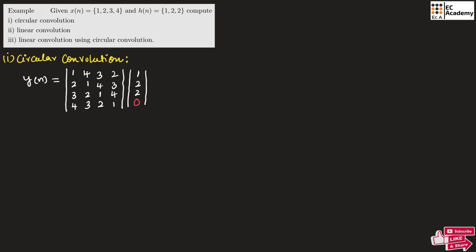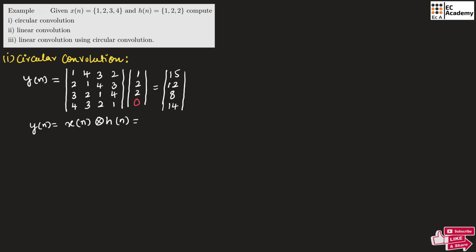Once the matrix is written, we can multiply. Multiplying the first row with the column gives 15. Multiplying the second row gives 12. Multiplying the third row gives 8. And multiplying the fourth row gives 14. So y of n, the circular convolution of x of n and h of n, equals 15, 12, 8, and 14. This is the circular convolution for the given sequences.